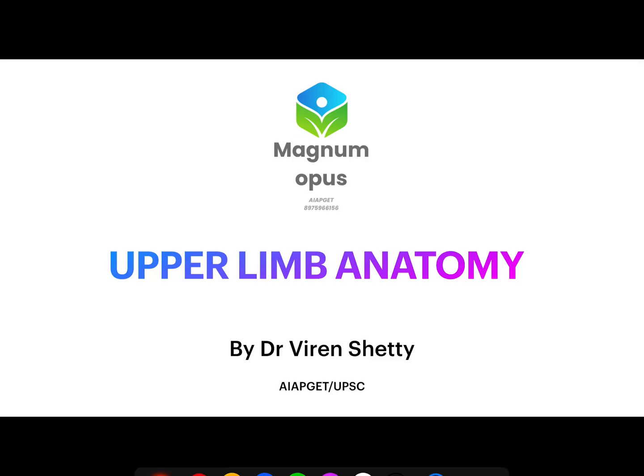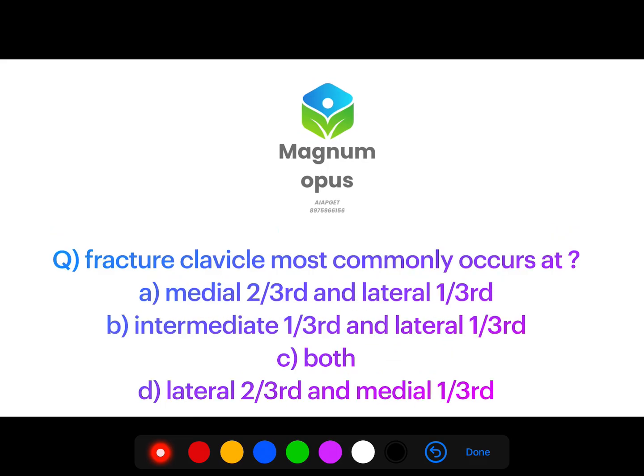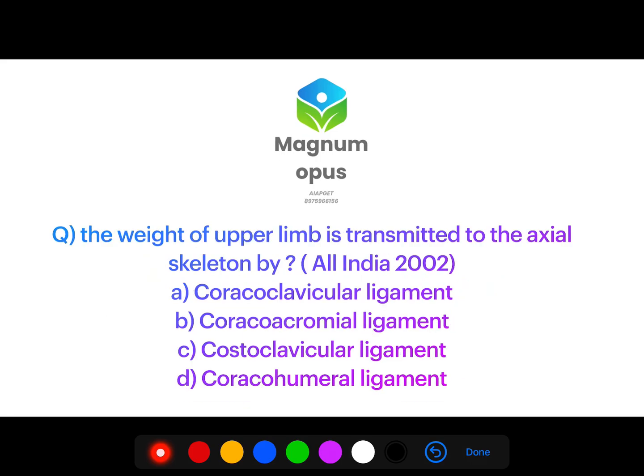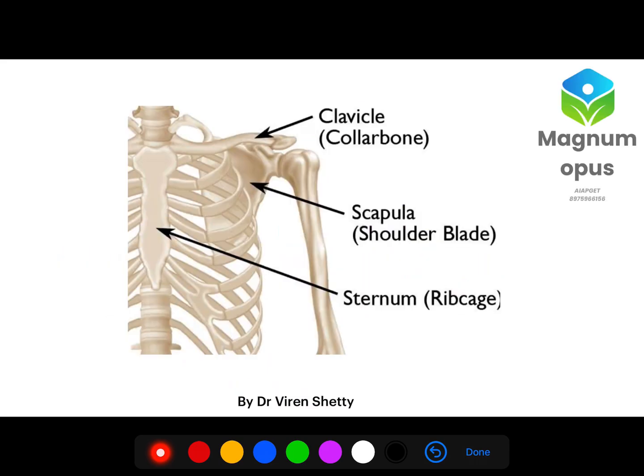We are looking at upper limb anatomy and we have a few questions to address. The first question is: the weight of upper limb is transmitted to the axial skeleton by? And another question is: fracture of clavicle most commonly occurs at? We'll come back to these questions after we understand the theory part. In today's lecture we're going to focus on the clavicle.